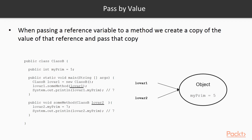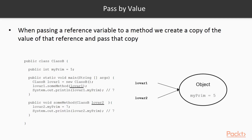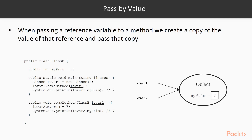The two methods — the main method and the method called some method — have the same object. They manipulate the same object. So the changes brought inside some method to that object will be visible when we go back to the main method. We have changed the instance primitive variable of that object — it was set to 7. And to have a witness, we output that instance primitive variable. When we go back to our main method, we output that variable again to the console to compare our values.